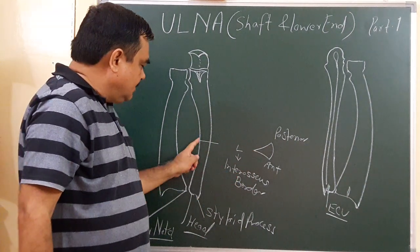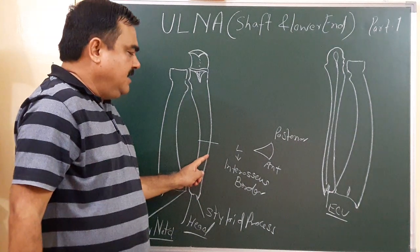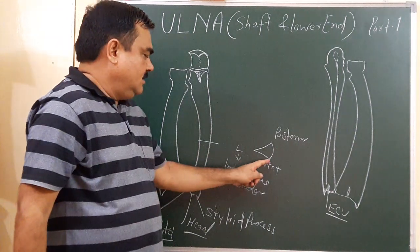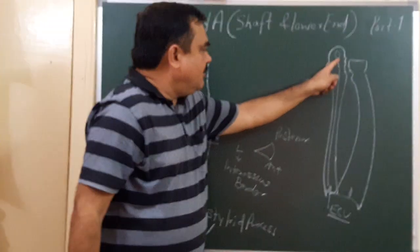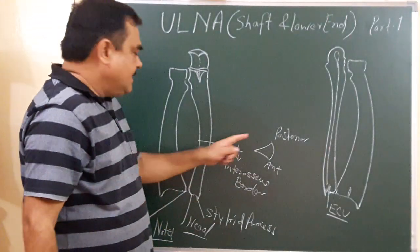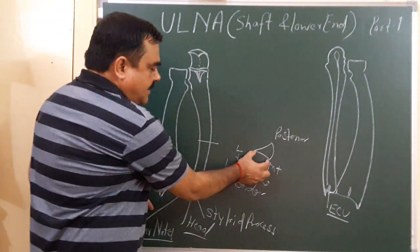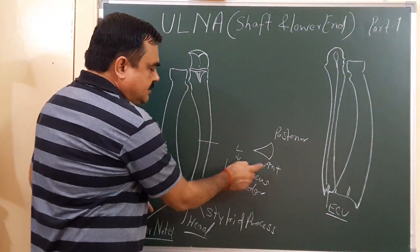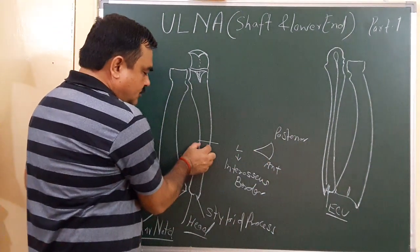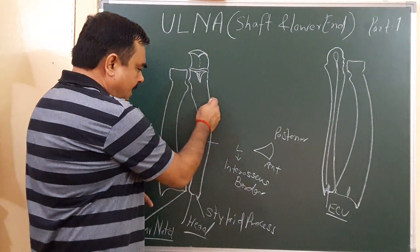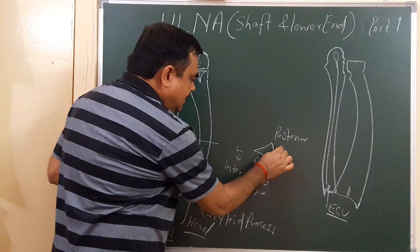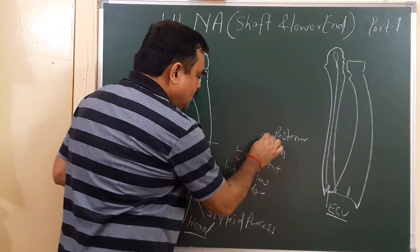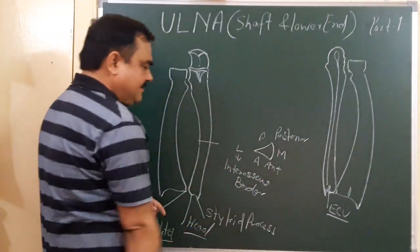This is the posterior border and its surfaces. This is the anterior surface — between the interosseous border and the anterior border. On the medial side is the medial surface. So this is anterior, this is medial, and this is the posterior surface.